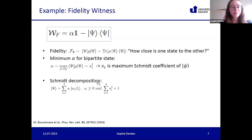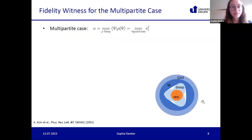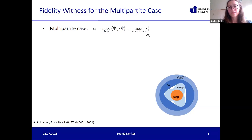It turns out that when we maximize the fidelity over all separable states rho, it is maximized by s_1 squared, where s_1 is the largest Schmidt coefficient of the vector psi. As a reminder, the Schmidt decomposition decomposes any vector state psi into orthonormal vectors with positive coefficients s_i that square-sum to one. One can also write down the fidelity witness in the multipartite case; there one maximizes over all biseparable states, and it again gives s_1 squared taken over all possible bipartitions.